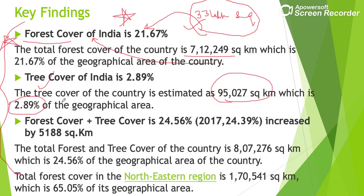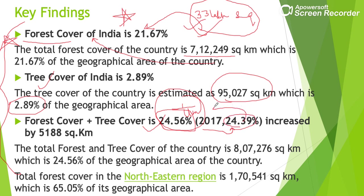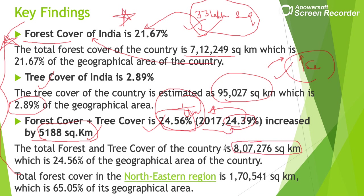Combined forest cover and tree cover is approximately 24.56%, meaning around one-fourth of India's land. Compared to the 2017 report (24.39%), there is a marginal increase of 5,188 square kilometers. The key takeaway is that India's forest and tree cover has increased over the last two years. Total forest and tree cover is around 8,07,276 square kilometers.